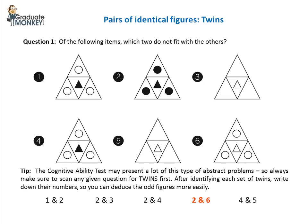Here's a tip. The cognitive ability test may present a lot of this type of abstract problems, so always be on the lookout to be able to scan any given questions for twins first. After identifying each set of twins, write down their numbers so you can deduce the odd figures more easily.